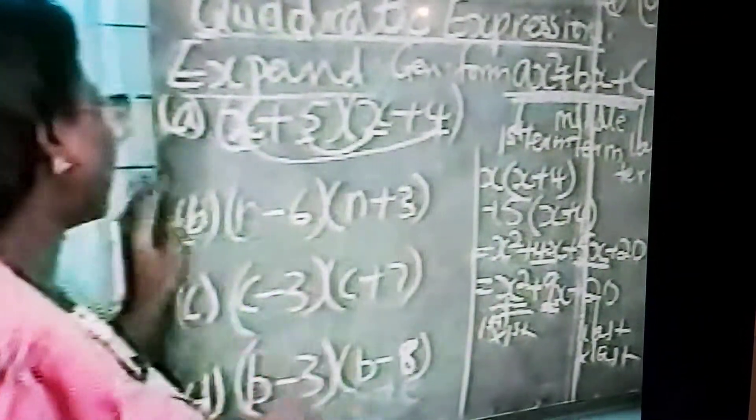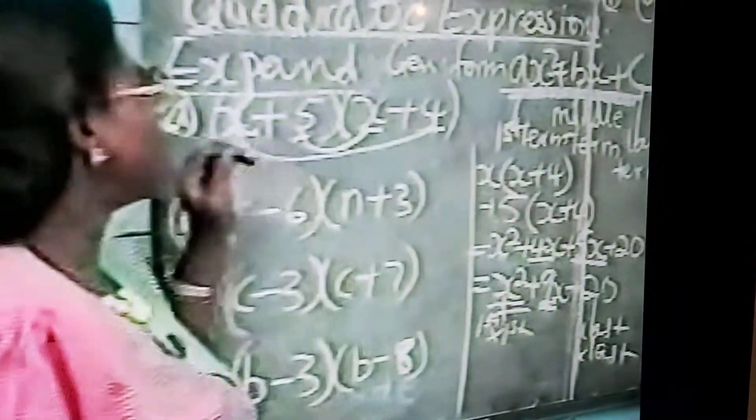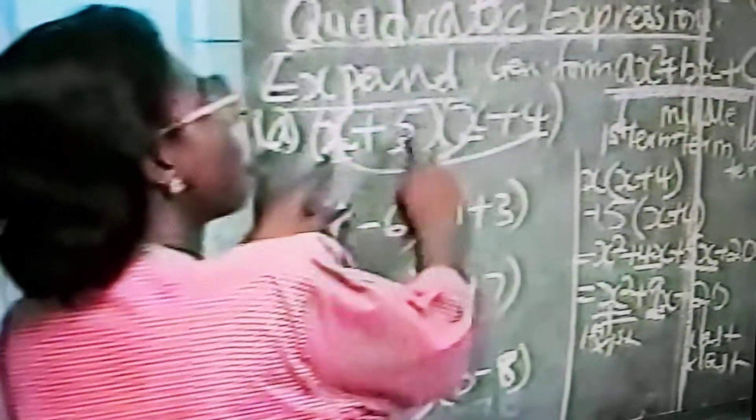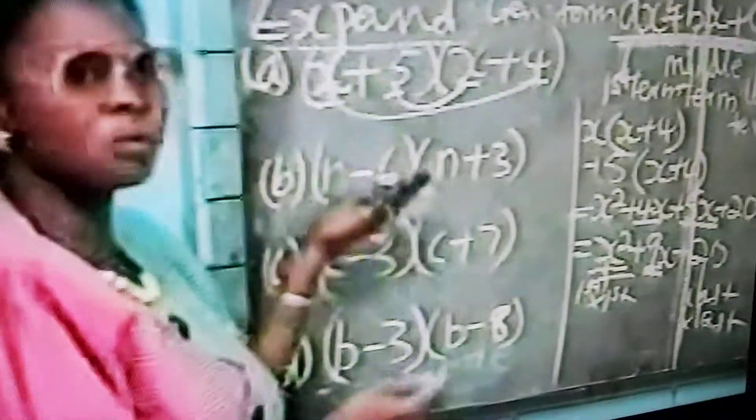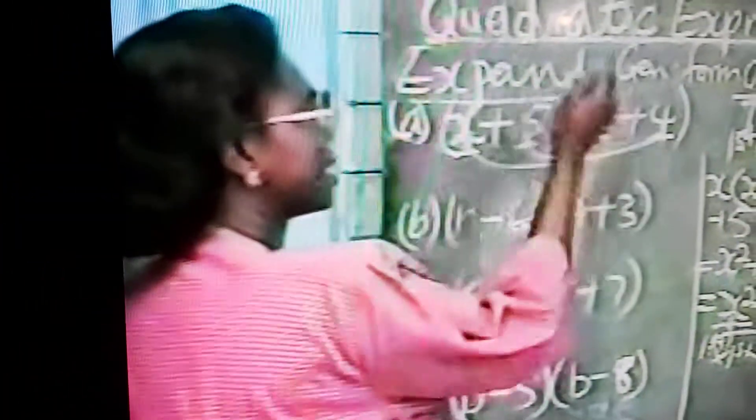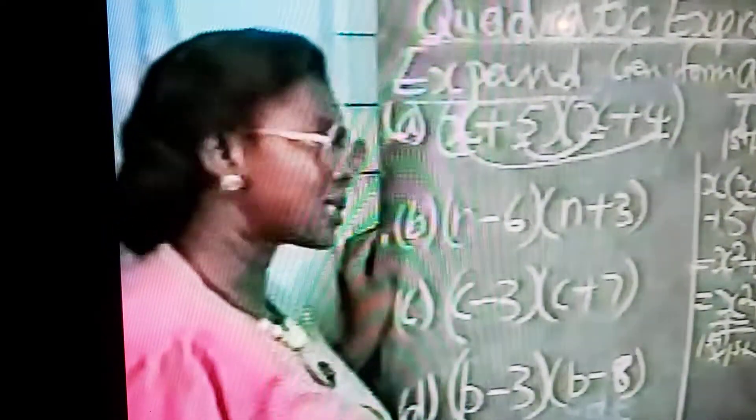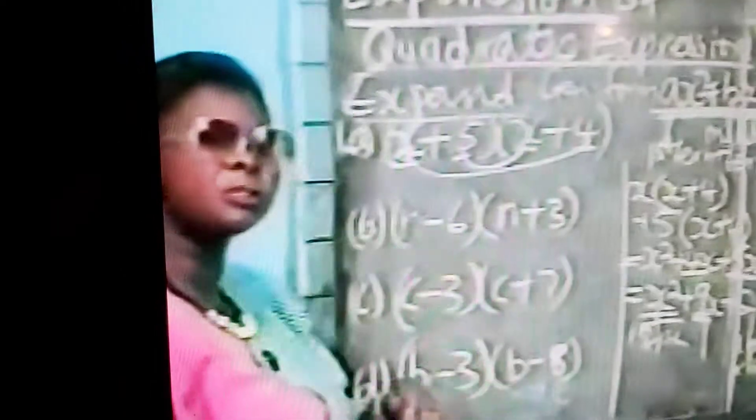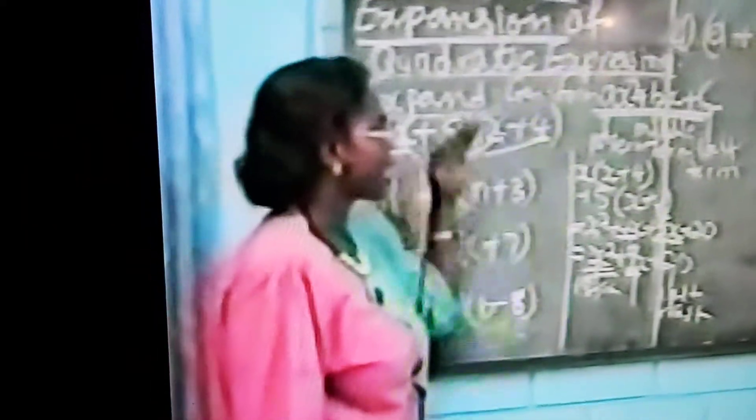But if you are lucky to find what at JSS3 level, which I'm sure this is for, you will discover that most of the quadratic expressions you are dealing with probably have just 1 as their coefficient. So if this is 1 and this is 1, then we don't have to say 1 times a number is the same number. Just add this to this and get the middle term. So the coefficient of the middle term is the sum of the two constants. What I am driving at is this. The expansion of quadratic expression should be done directly. This is very important.